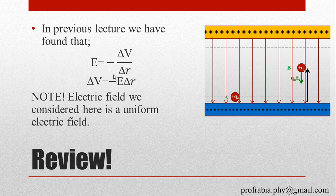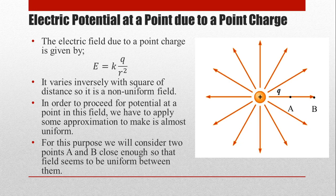Today we have to find the electric potential difference and electric potential at a point, but now the field is due to a point charge — which is a non-uniform field, because its dependence is 1/r². As you move the charge away, the strength of the field decreases. Moreover, the field lines are not parallel and equally spaced, confirming this is a non-uniform field case.